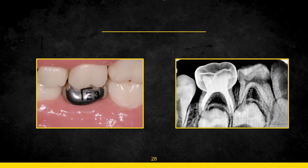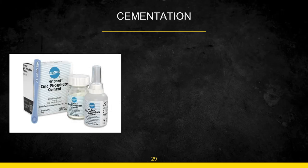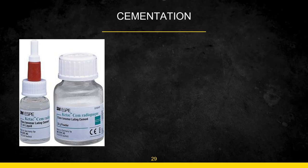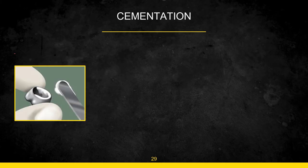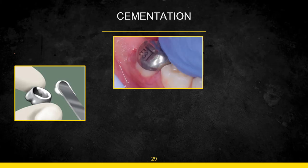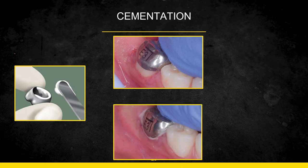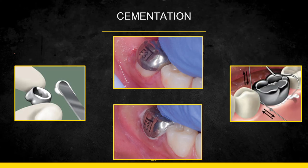Once satisfied with fit and occlusion, we proceed to cementation. Various cements can be used: zinc phosphate luting cement, glass ionomer luting cement, polycarboxylate luting cement, etc. At least two-thirds of the crown should be filled with cement. Place the crown from the lingual to the buccal surface. Apply finger pressure or use a crown seater and ask the patient to bite down forcefully. Clean excess cement with an explorer and floss.